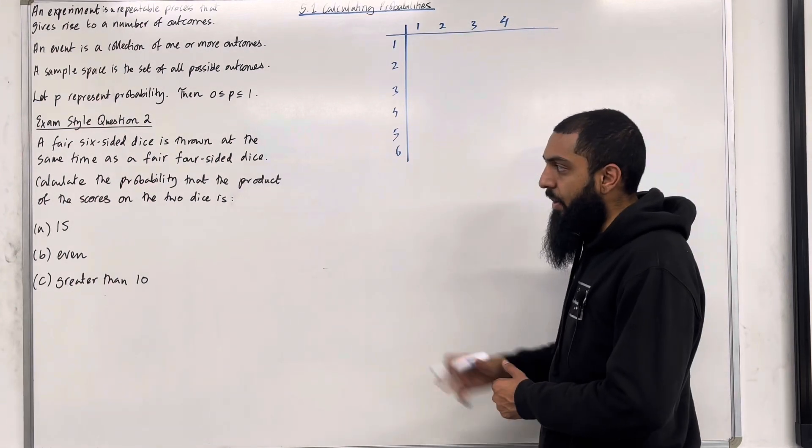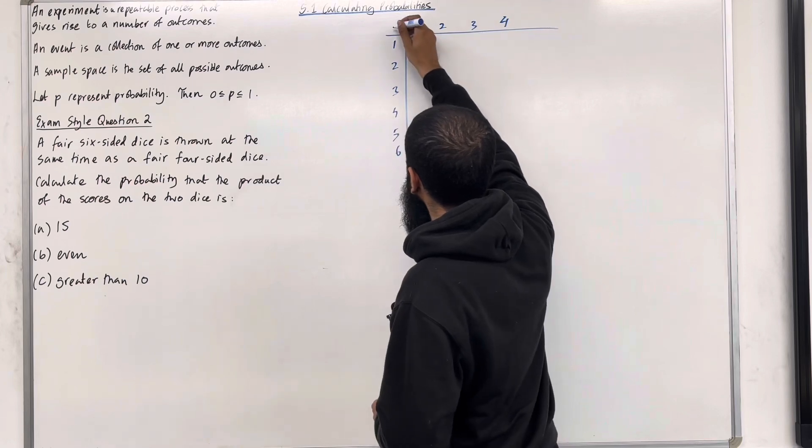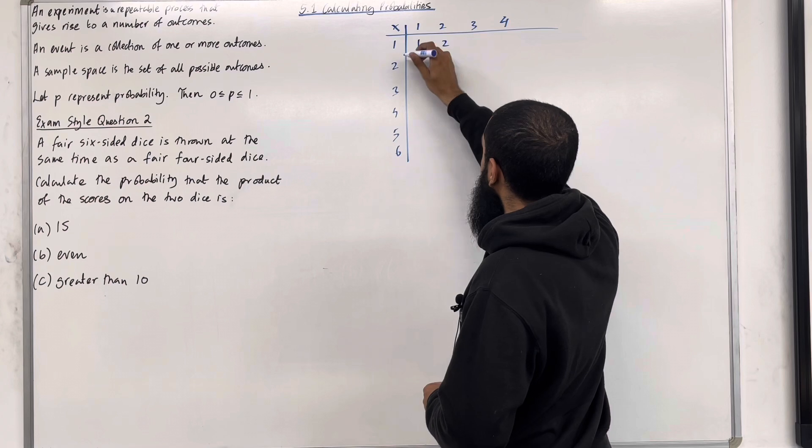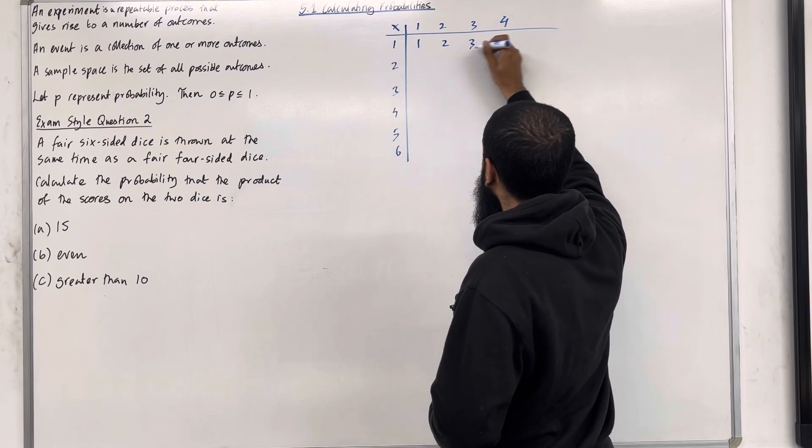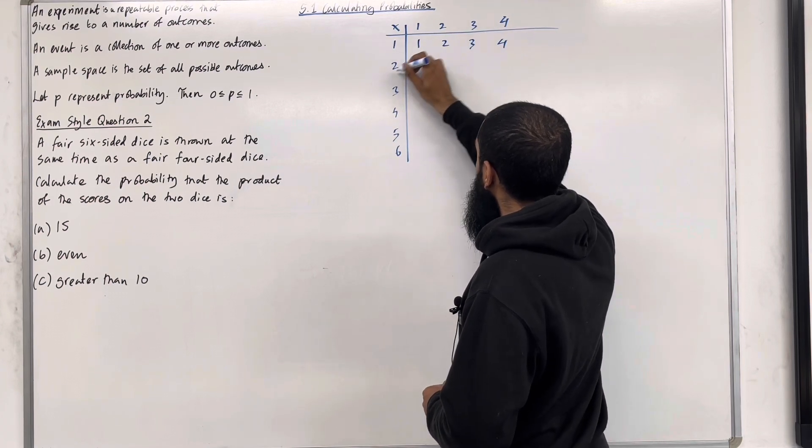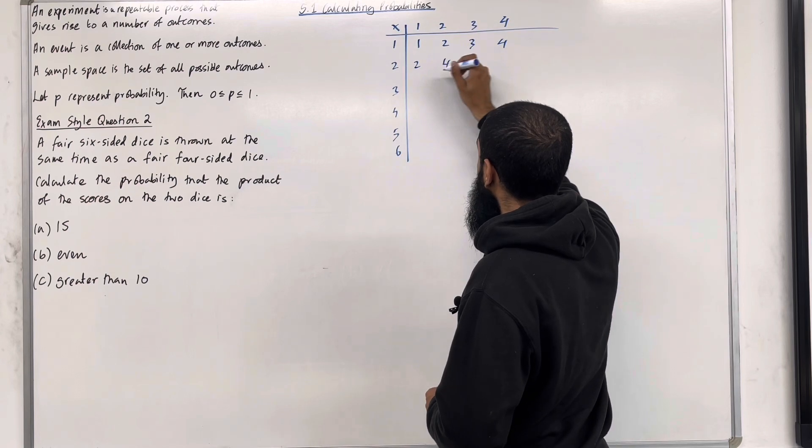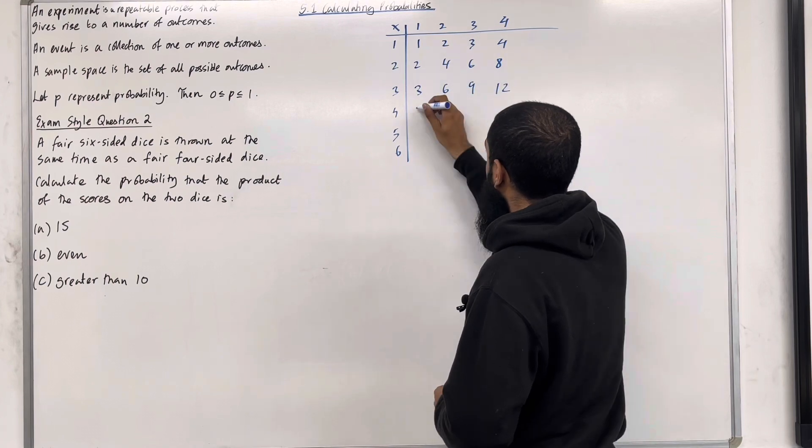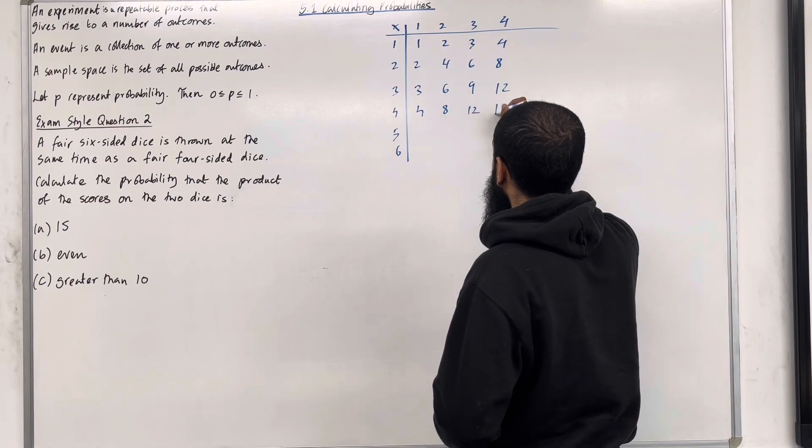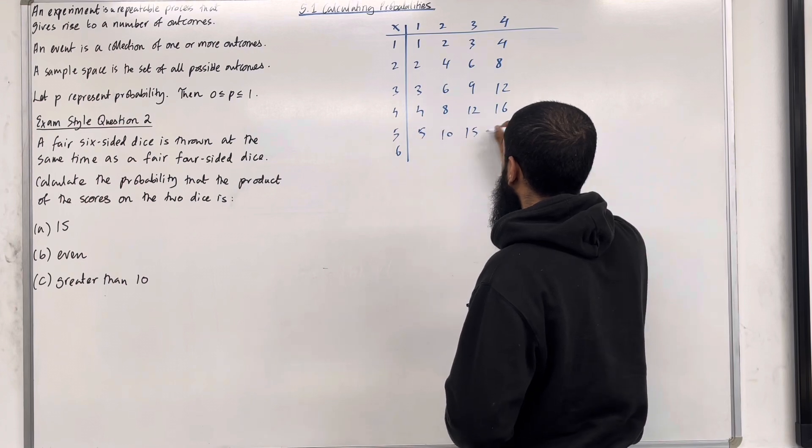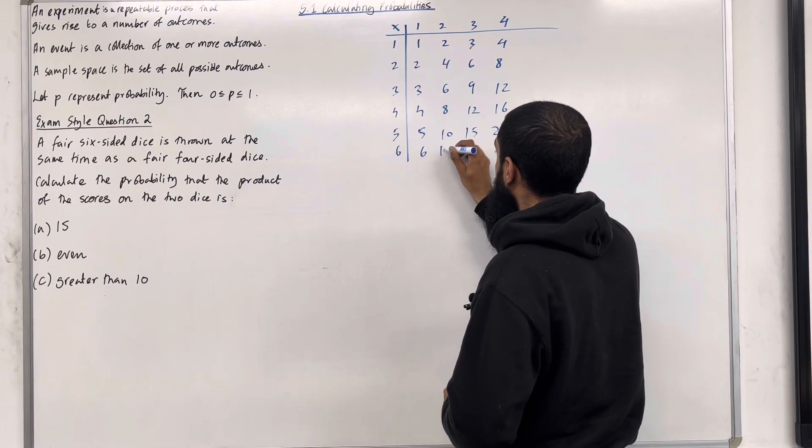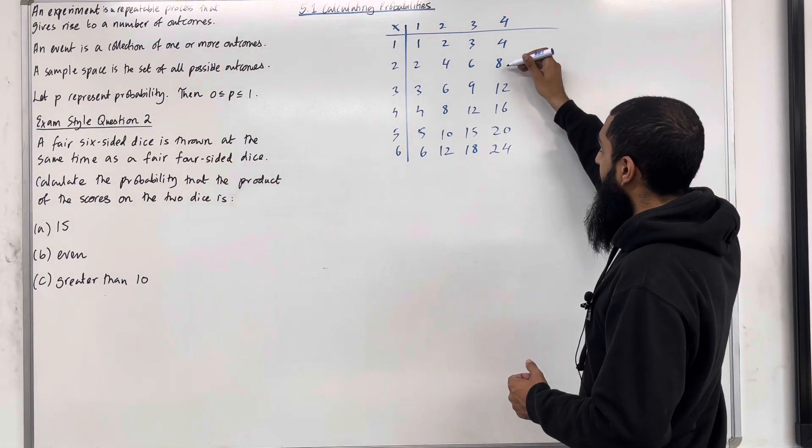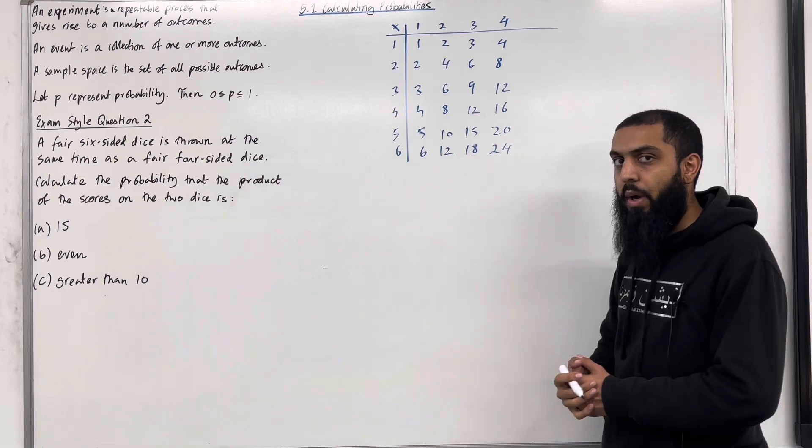We want to look at the product of the scores on the two dice. Multiplication. 1 times 1 is 1, 1 times 2 is 2. So we have 1, 2, 3, 4. 2 times 1 is 2, 2 times 2 is 4. We have 2, 4, 6, 8. Then we've got 3, 6, 9, 12. 4, 8, 12, 16. 5, 10, 15, 20. 6, 12, 18, 24. In this experiment, there are 4, 8, 12, 16, 20, 24 possible outcomes.